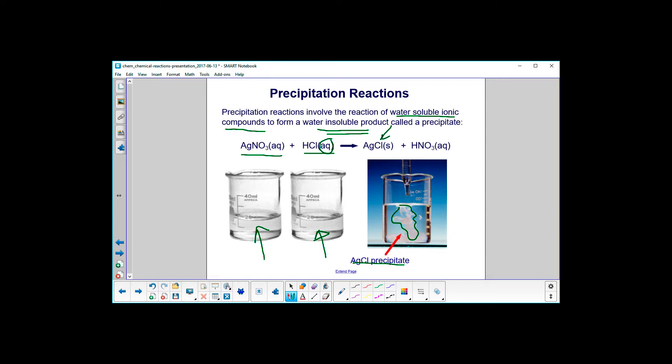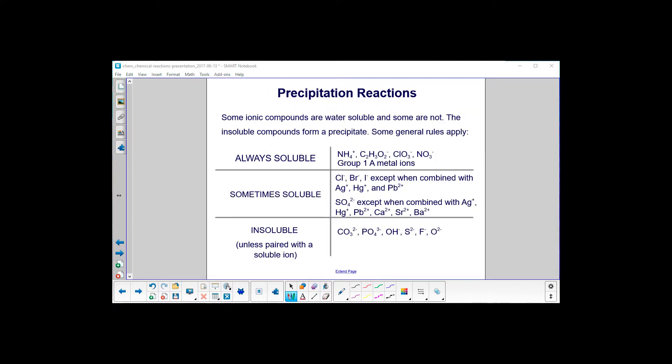And the liquid that is left behind is nitric acid. And here you can see it's a liquid because of the aqueous. Precipitation reactions. Some ionic compounds are water soluble, and some are not.